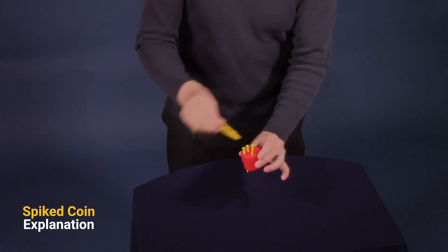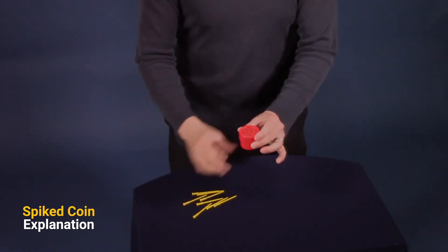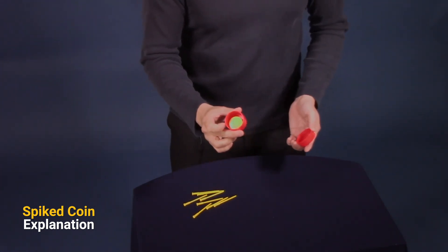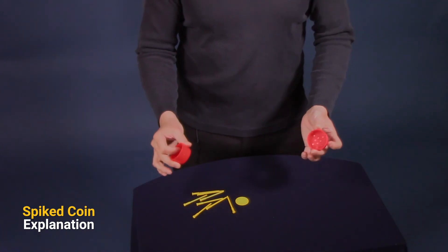you pull all the spikes out, and you can now show that the coin is whole again. That's the explanation.